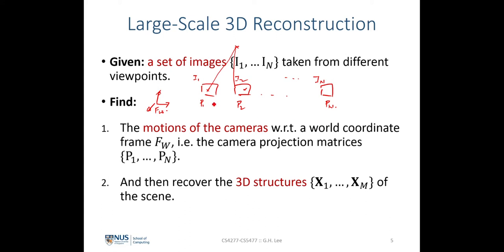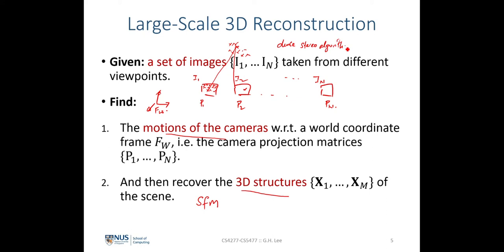If we have N images, we perform camera motion estimation and linear triangulation to get all 3D points seen across every image in the collection. When we are interested only in recovering 3D points corresponding to image correspondences, this is called Structure from Motion (SFM) — the name implies we find the motion of the cameras first before finding the 3D structure. Next week we'll look at recovering the 3D point of every single pixel, yielding a dense 3D reconstruction via the dense stereo algorithm.